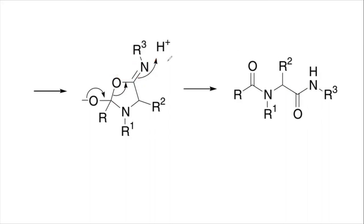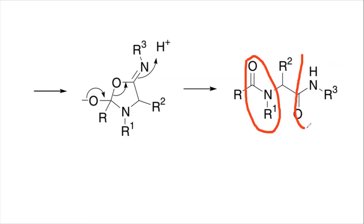Finally, the nitrogen donates its electrons to hydrogen, forming a covalent bond with hydrogen. After this electron transfer, nitrogen has a bond with hydrogen and the oxygen remains as is. Looking at this final compound, we can see one amide group here and another amide group here — so a diamide compound is formed. This completes the mechanism for the Ugi reaction.